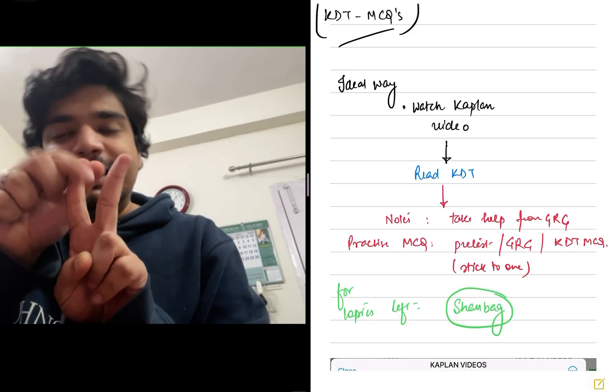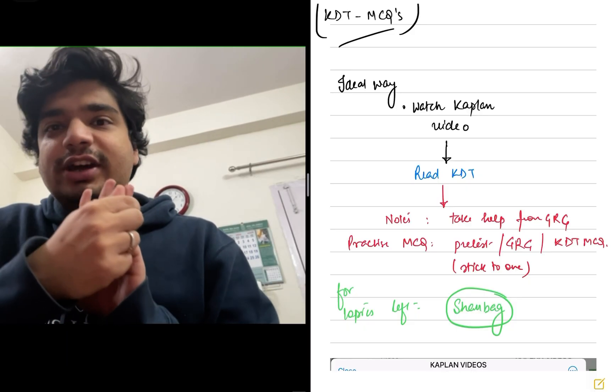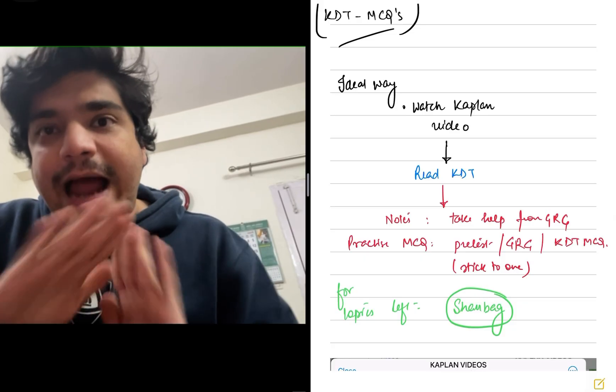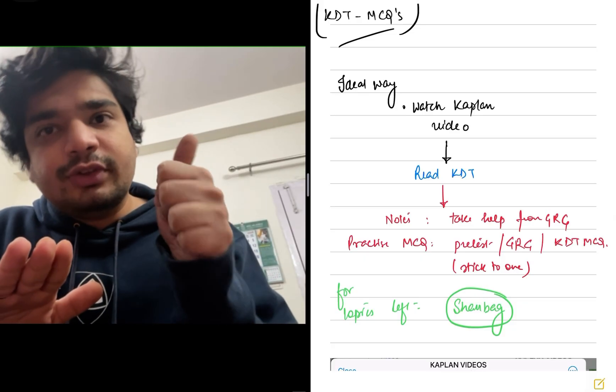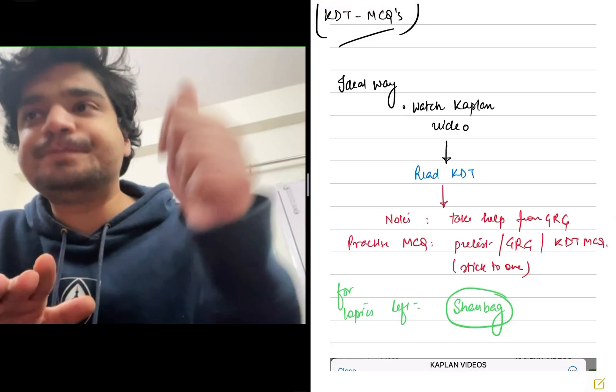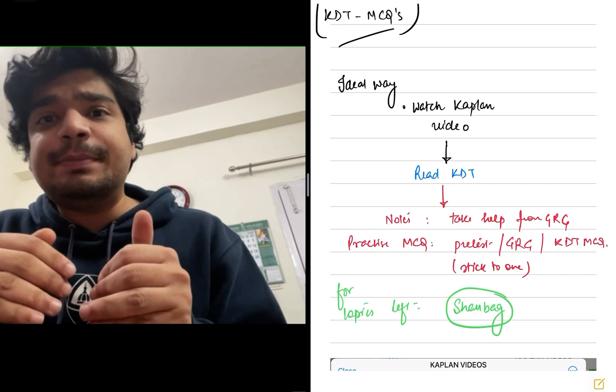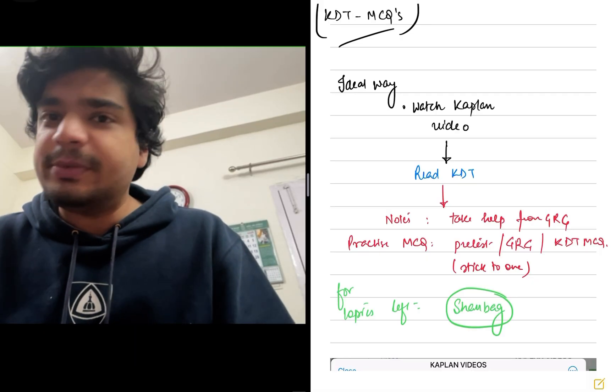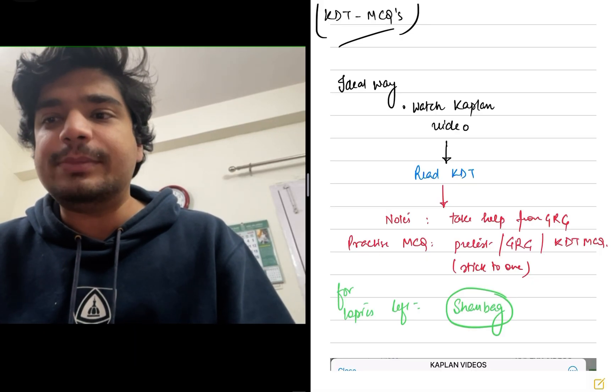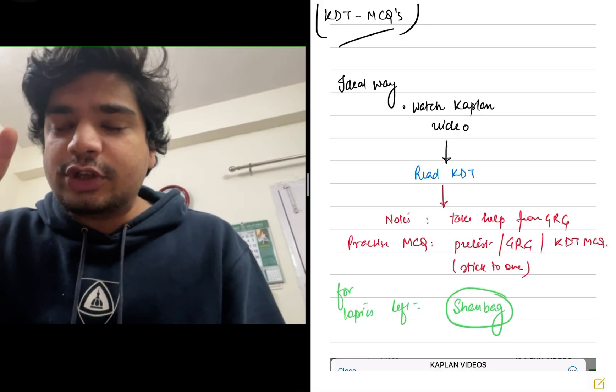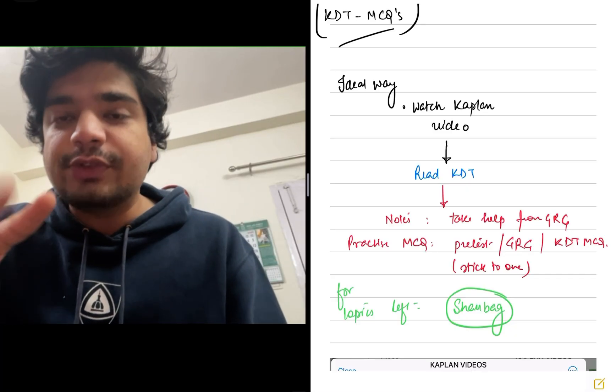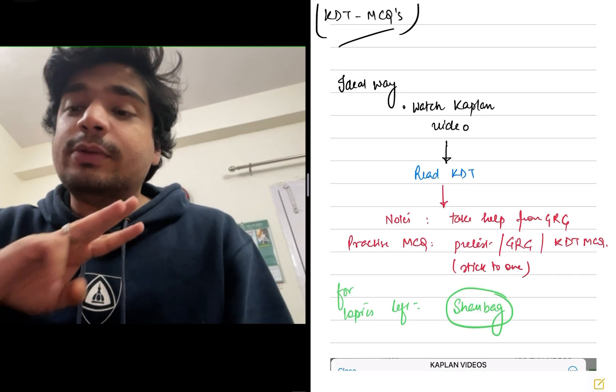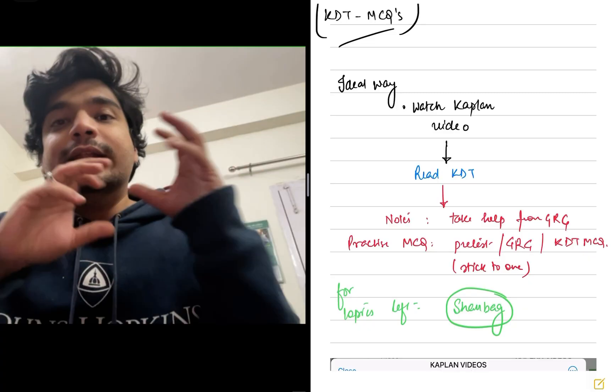So if you just use two resources, Kaplan videos plus KDT plus GRG review. These three are actually adequate frankly. Kaplan videos get your concepts right. Second, read KDT, get notes from GRG, make notes from GRG, and then solve MCQs given at the end of GRG which are basically your NEET PG or INICET MCQs. In this way, you would have covered MCQ part as well. In this way, you would have made notes as well. In this way, you would have got your concepts clear as far as Kaplan video is concerned. This is the ideal way.